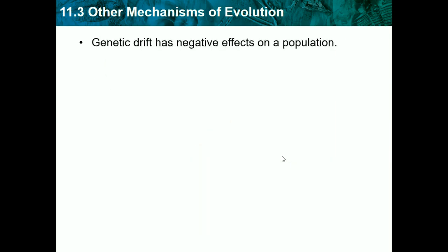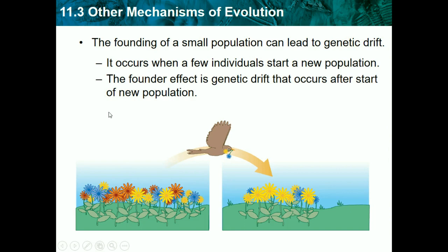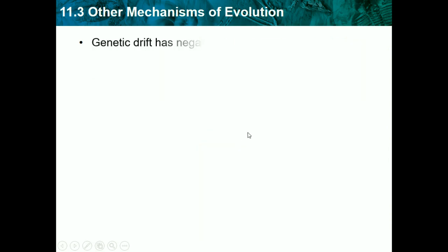Genetic drift has negative effects on a population: individuals are less likely to be able to adapt, and harmful alleles can become more common by chance. For instance, if orange flowers were resistant to high heat but don't exist in the new population, all flowers there will die off in a hot climate — it's less likely the population can adapt.